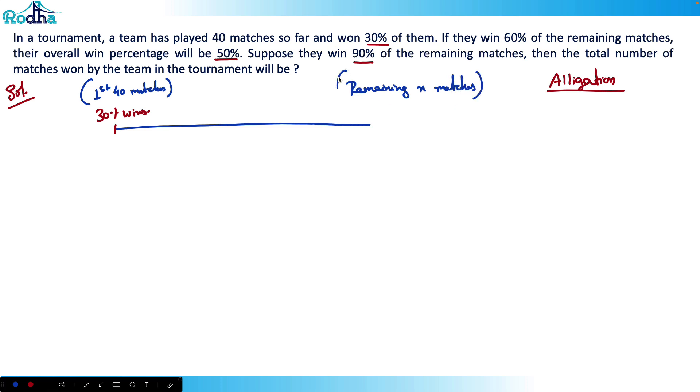They have 60% wins here. And overall, if I combine these two, they have 50% wins overall. That's alligation, right? Mixing two things to get a third thing. First 40 matches is mixed with remaining x matches to get total number of matches, and in total you got 50% wins here.